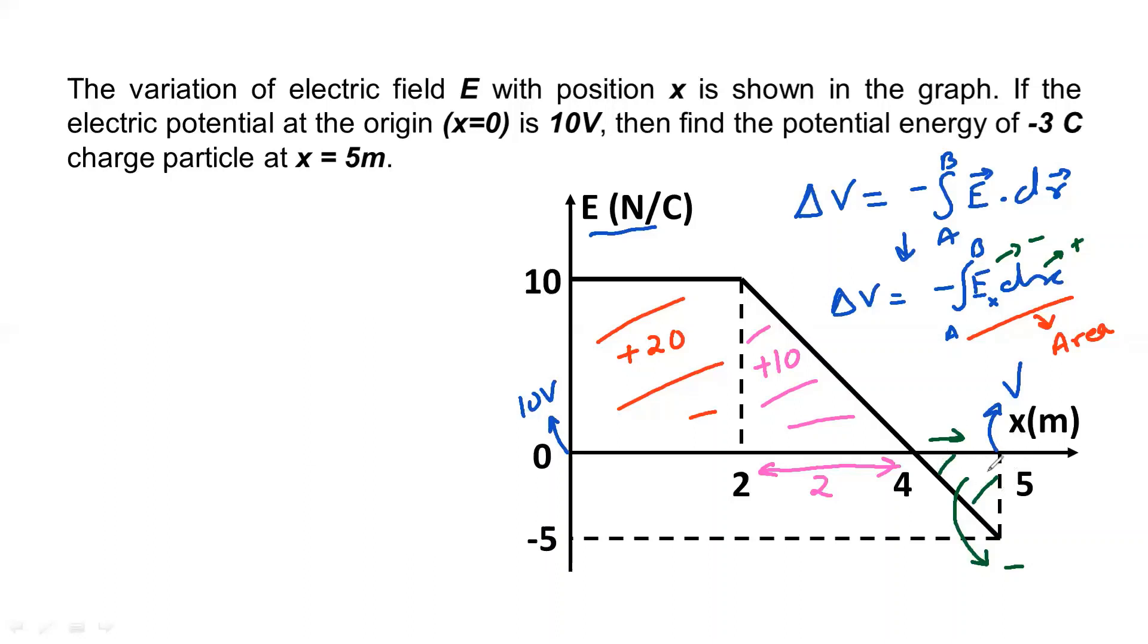I could write delta V is equal to negative of area. So negative of area, so minus of area total 20 plus 10 minus 2.5. So delta V, that is V minus 10, is equal to minus of...